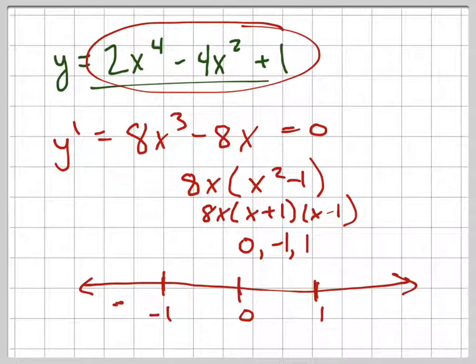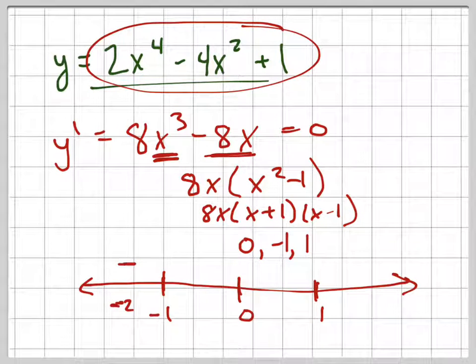If I had like negative 2, if I plugged in negative 2, just do it in your head. Negative 2 cubed is negative 8. Negative 8 times 8 is negative 64. Plus something is still going to be negative. So it's negative to the left of negative 1. Now let's plug in 1 half and see what happens at 1 half. At 1 half it's going to be, if I cube 1 half, I get 1 eighth, so 8 times 1 eighth is 1. Minus 8 to the 1 half, that's still going to be negative.